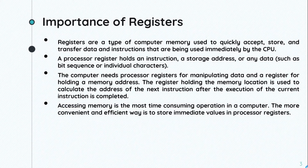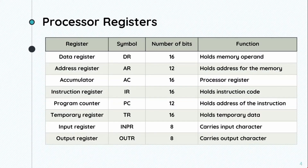Now we will look at the types of registers. First, we have the data register. The data register has the symbol DR — D for data and R for register. The number of bits is 16, and its function is related to the memory operator.